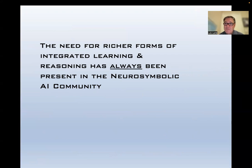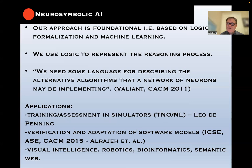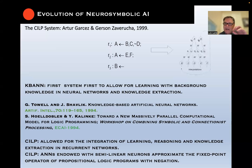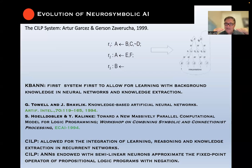The way we see Neurosymbolic AI is building systems with an underlying logic as the reasoning component. As Valiant said, we need the language to describe the algorithm that a network of neurons would be implementing. In our approach, we build artificial neural networks that can reason using logical rules inspired by formal logical systems. This idea comes from the 1990s, when researchers like Jeff Tawel, Jude Shavlik, Stefan Hölldobler, Arthur Garces, and Gerson Zaverucha realized they could integrate logic programming — specifically Prolog — with artificial neural networks, studying what kind of neural network could compute a Prolog program.